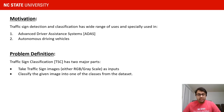So the problem definition here is: you have to capture an image, either RGB or grayscale, detect a traffic sign board, and then classify the image into one of the classes from the dataset.